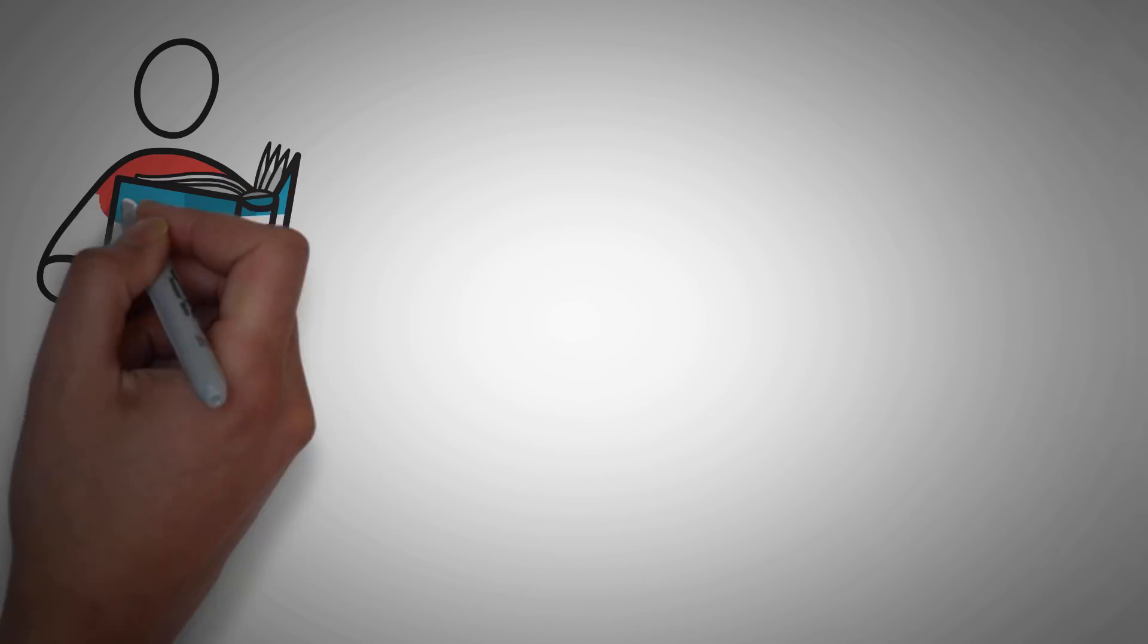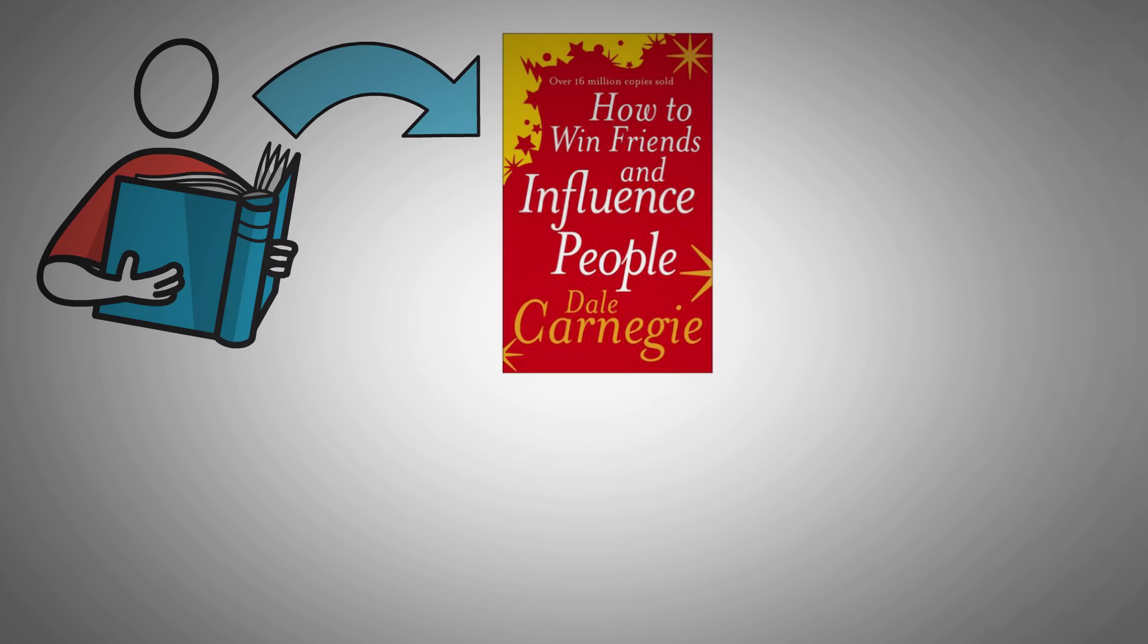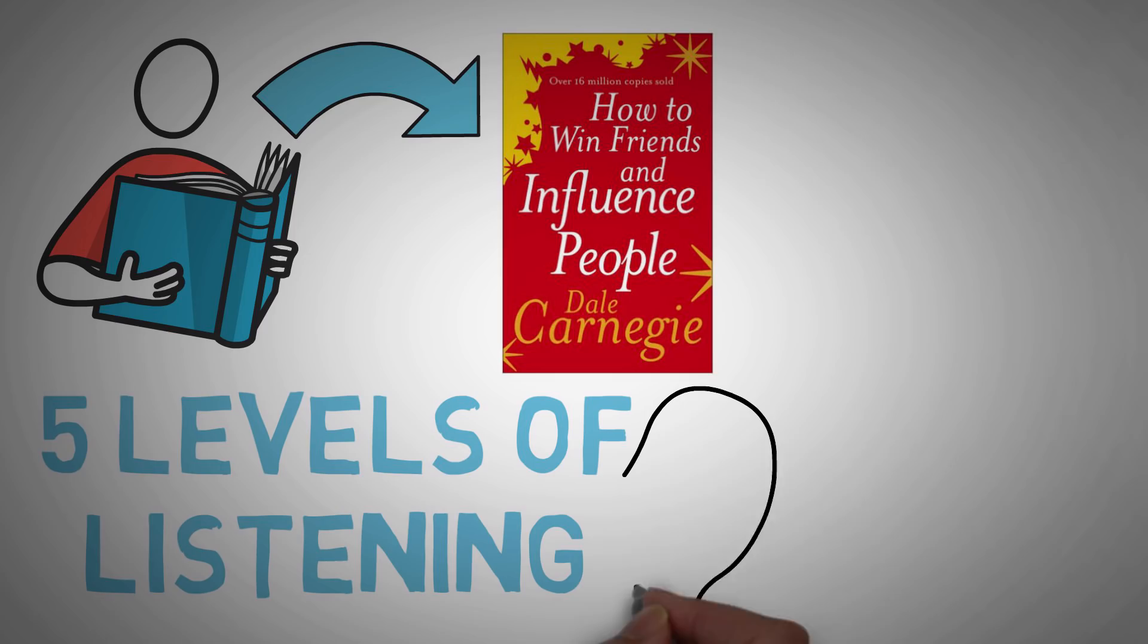In the famous book How to Win Friends and Influence People, the author Dale Carnegie talks about something called the five levels of listening. I want to break them down and explain them in this video so that you can have a better understanding of how to listen, specifically to girls.